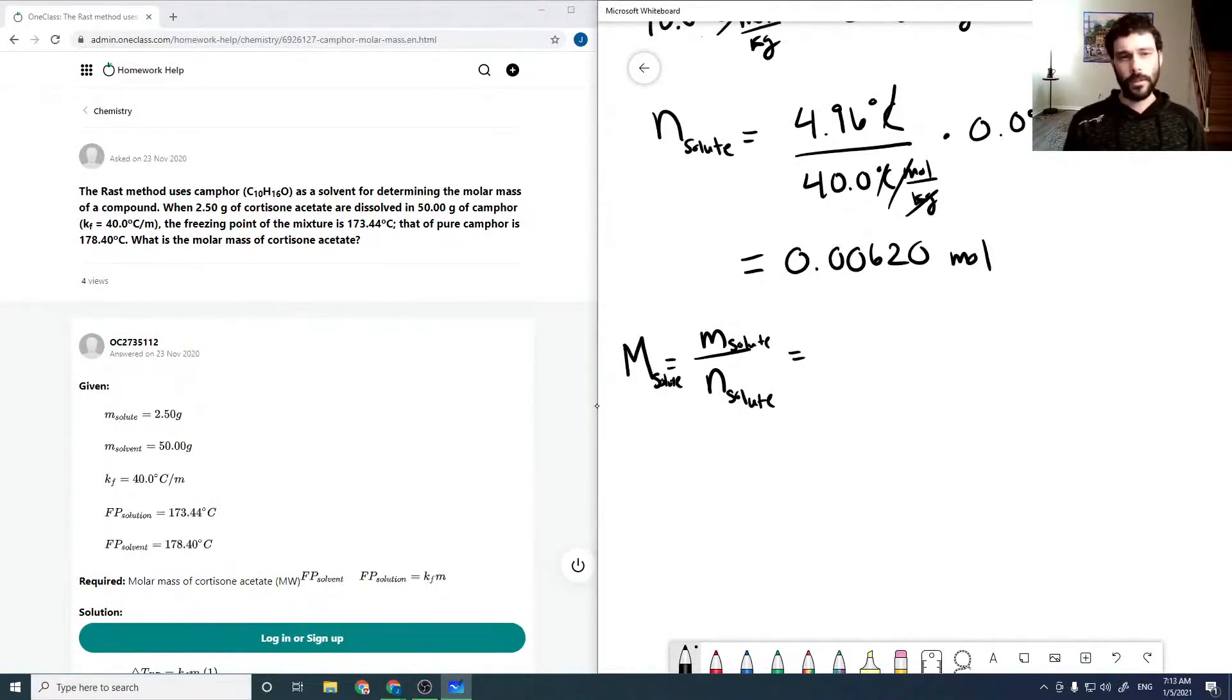Our mass is 2.50 grams, which is given in the question, over 0.00620 moles, which comes out to be 403.226 grams per mole. And rounding to our three significant figures, 403 grams per mole.